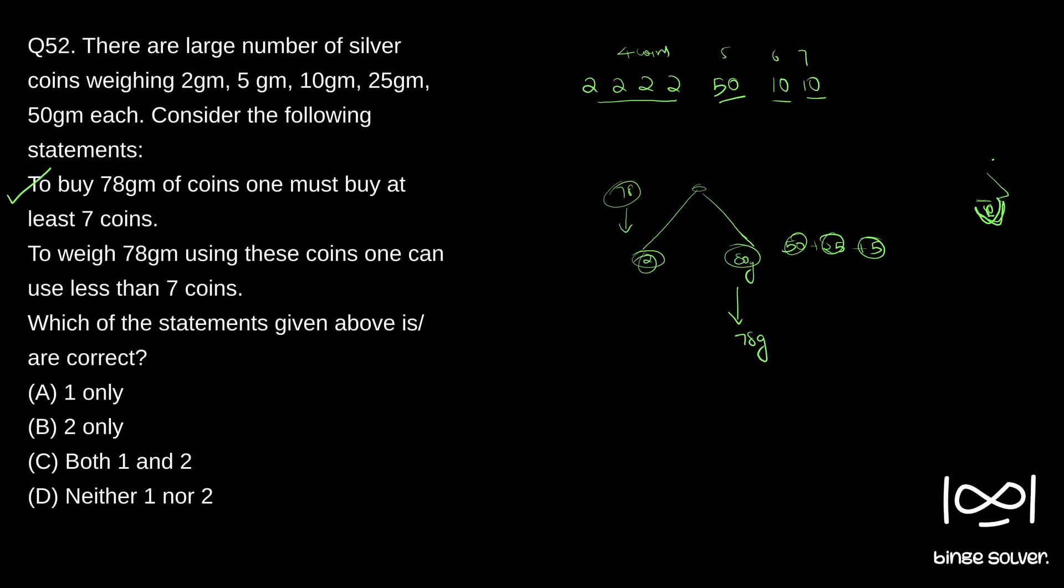Sorry I don't know why I am drawing such a bad figure. Weighing scale is something like this: 80 here, 2 here. So this is the weighing scale I am talking about. I'm not sure whether they meant this, but to weigh means something like this. So we can use lesser coins to weigh 78 grams. So that is the idea. This is also true. So solution to question 52 has to be C, both one and two. The solution to question 52, we have C, both one and two.